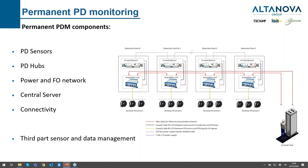Permanent monitoring components: we have the sensor where the analog signal is picked up from the asset; we have the PD apps acquisition unit which takes the analog signal and makes it digital; we have the power and fiber optic network — the power energizes the system and the fiber optic carries the digital signal from the acquisition unit to the central server. In the central server we have all the data elaboration.